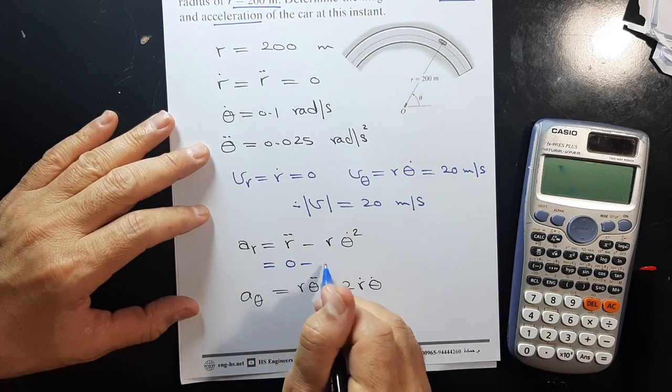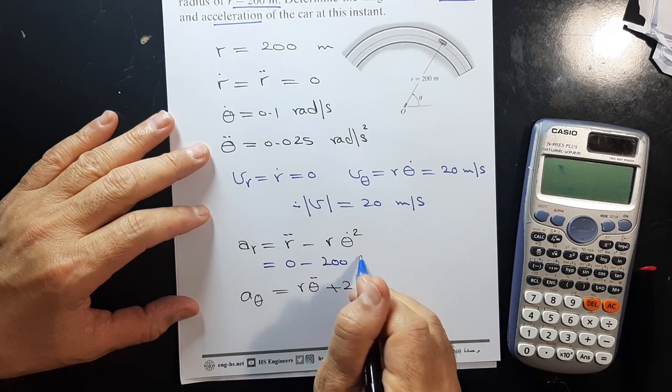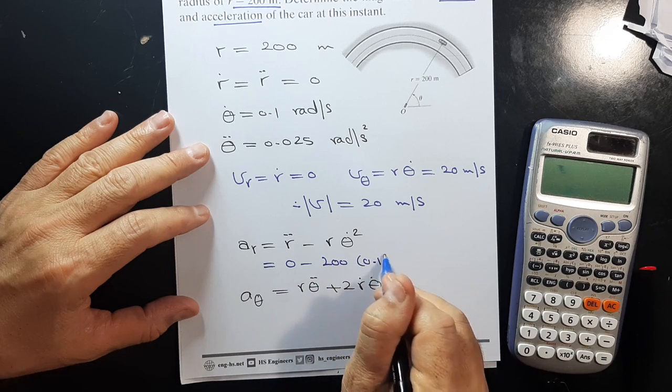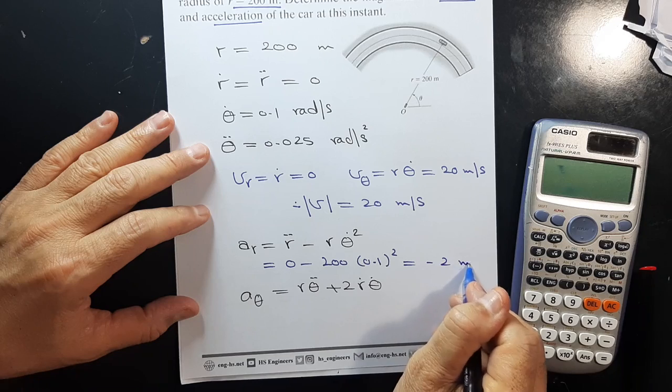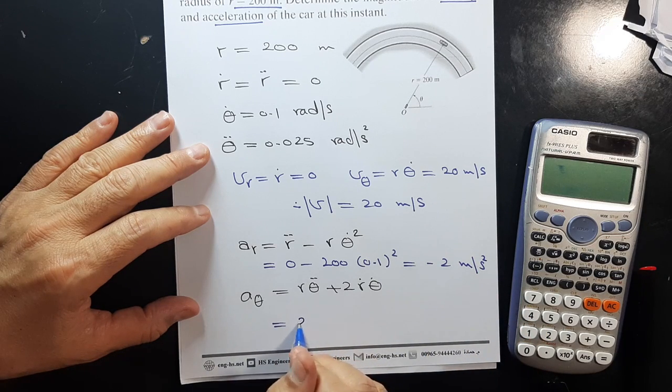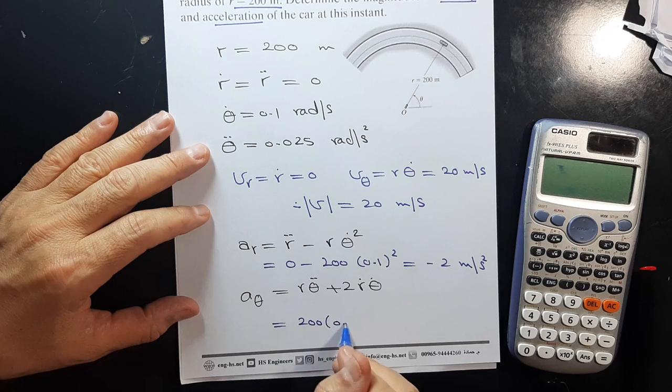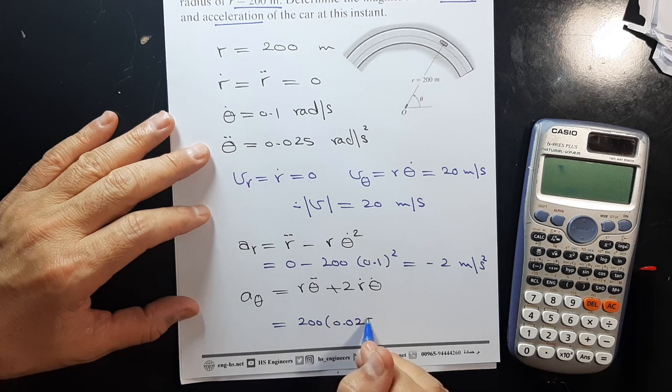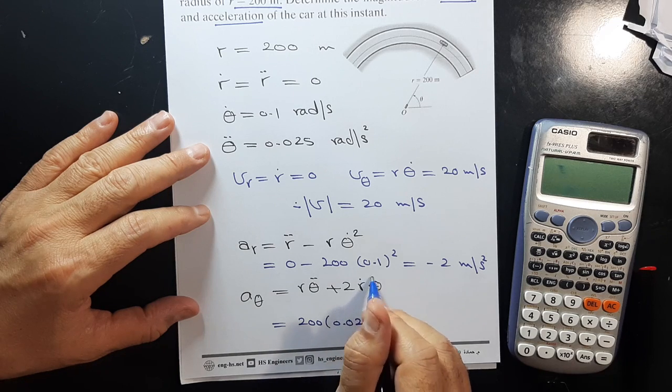r̈ equals zero, minus r which is 200 times (0.1)², so that gives -2 m/s². For aθ, r θ̈ is 200 times 0.025, and ṙ is zero.